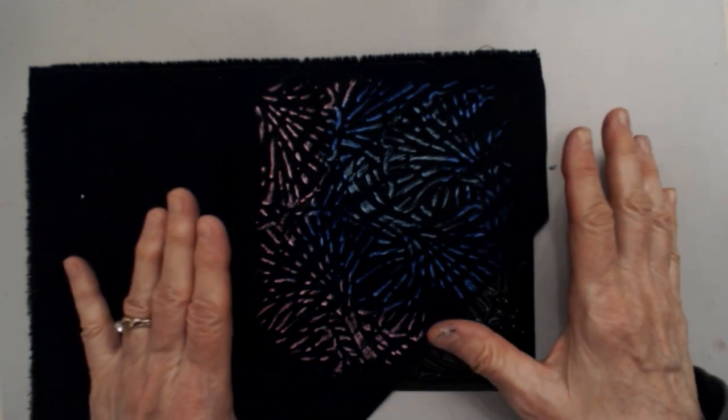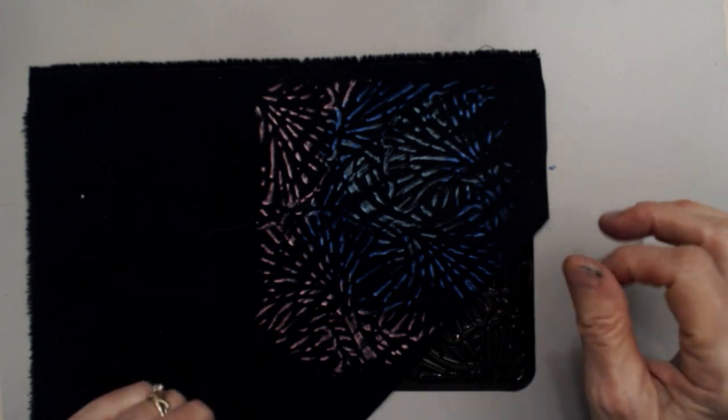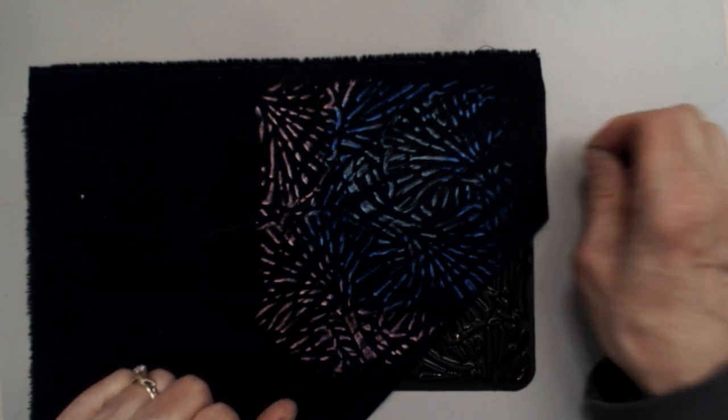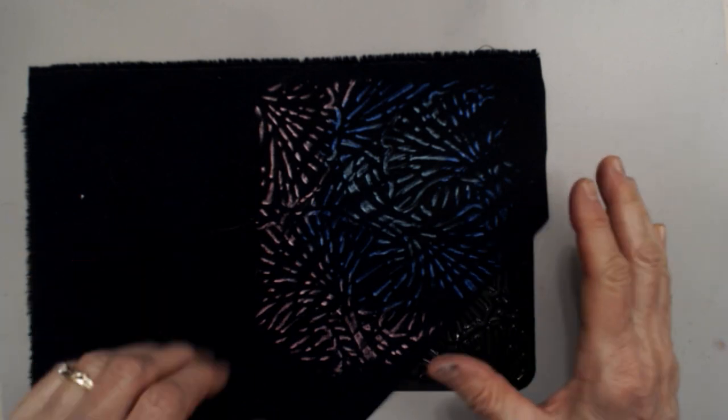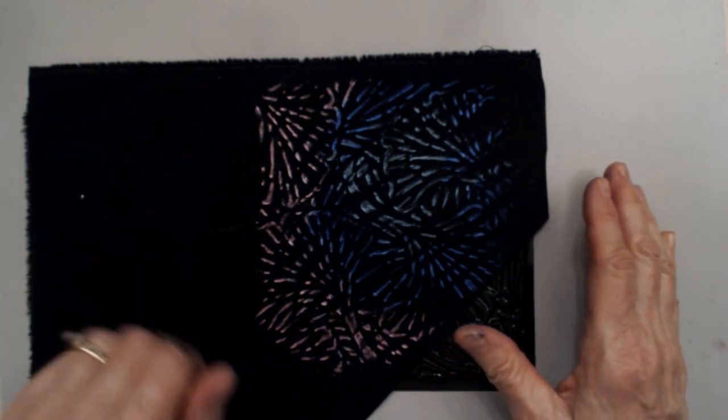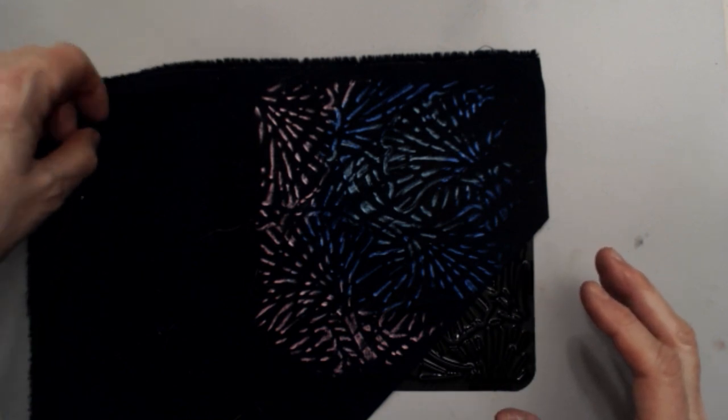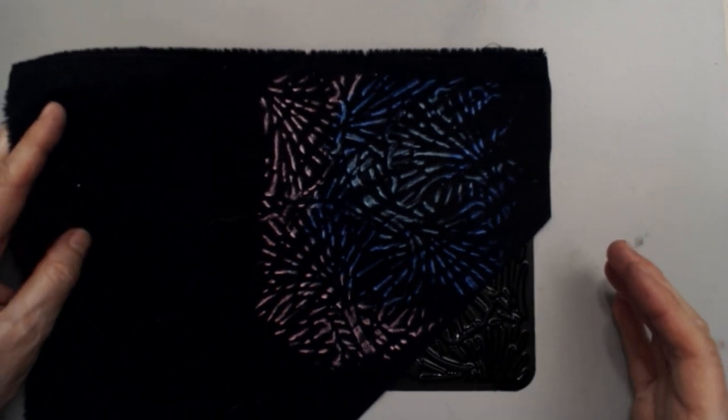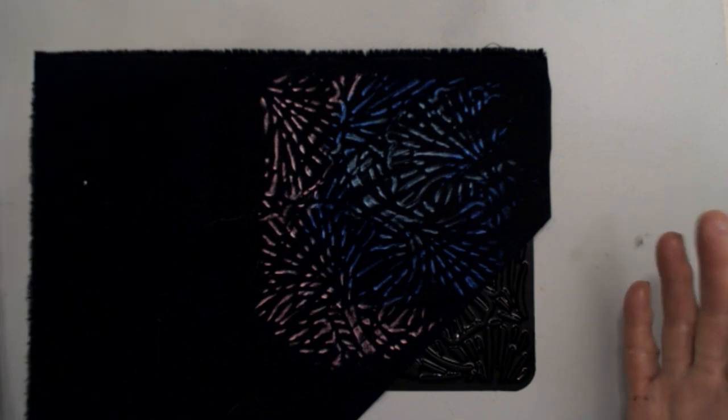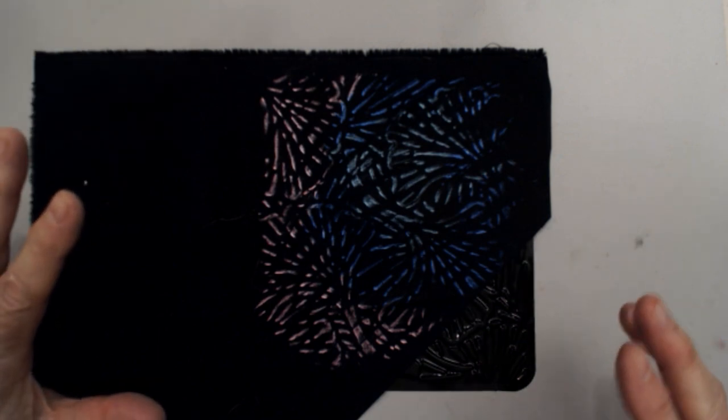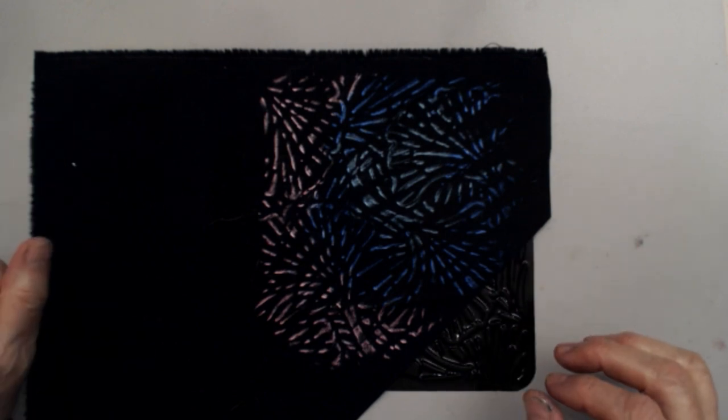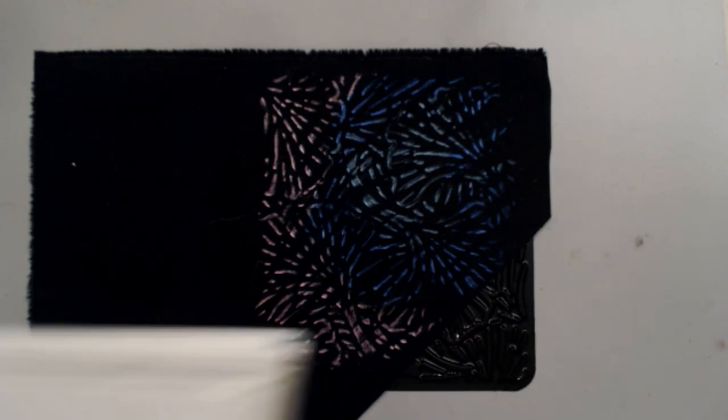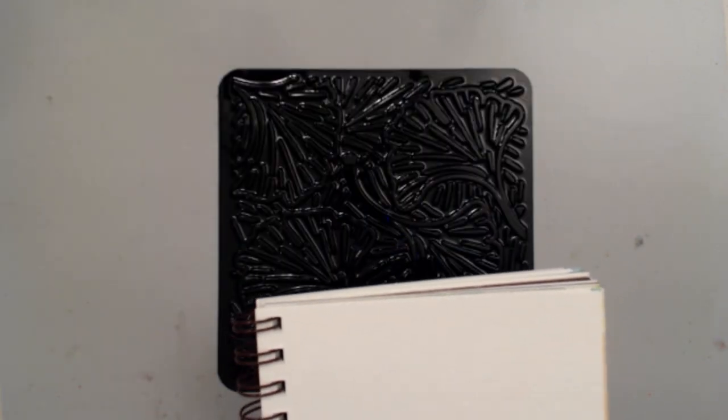The instructions that come with the paint sticks tell you how long you need to let them sit. I think it's like maybe 24 or 48 hours you need to let them sit, and then you can heat set them on fabric, and then it's permanent, and you can actually wash them. A lot of people like to do wearable art, and they want to be able to wash their garment, so you can do that with this product. You can also use them on paper.